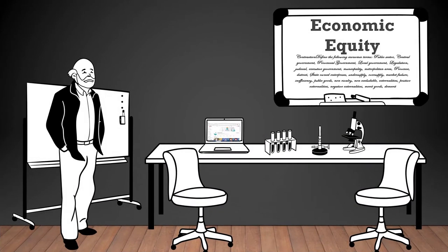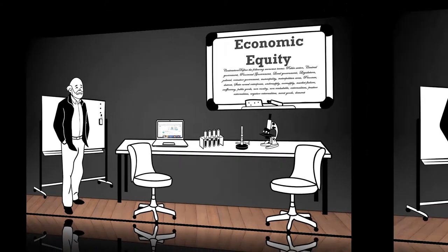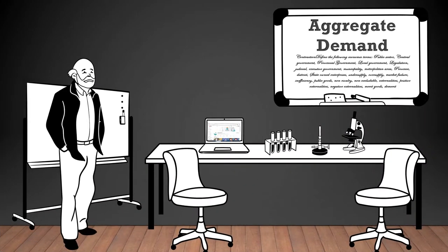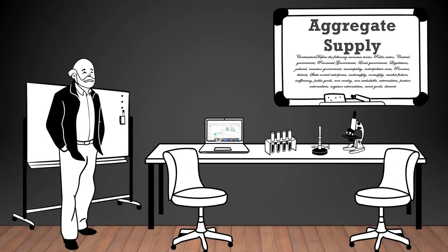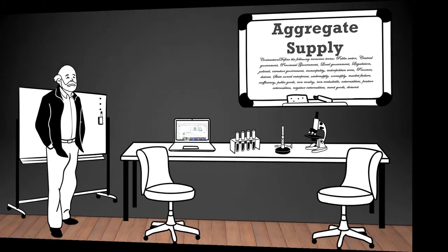Economic equity: the fair and just distribution of economic resources and opportunities among all members of society. Aggregate demand: the total demand for goods and services in an economy at a given price level. Aggregate supply: the total supply of goods and services in an economy at a given price level.